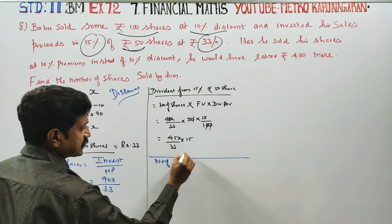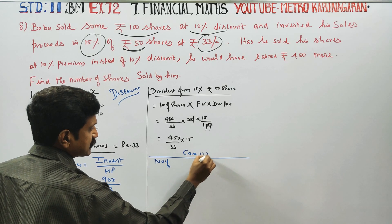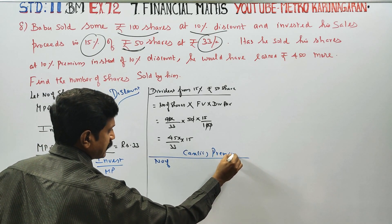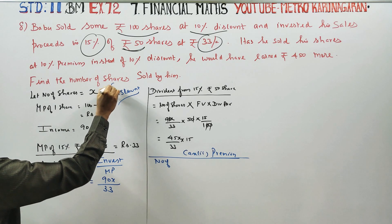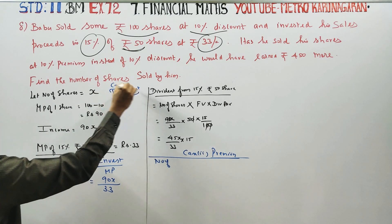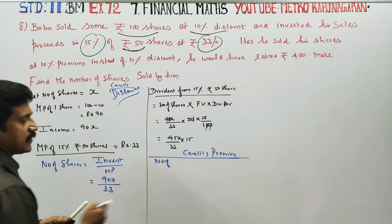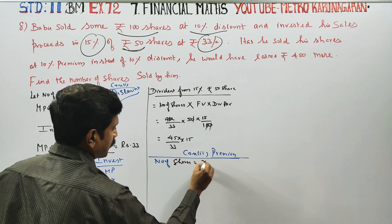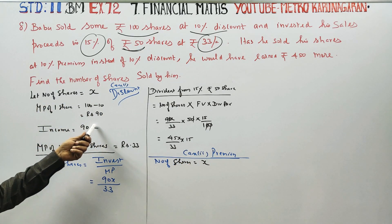Case 2 is premium and Case 1 is discount. In Case 1, the shares were sold at a 10% discount. Now we consider Case 2, which involves a premium.